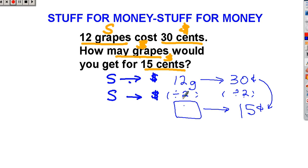This could be multiplication in here or it could be division. It cannot be addition or subtraction. 12 divided by 2 is 6, 6 grapes. So my answer to this problem is 6 grapes.